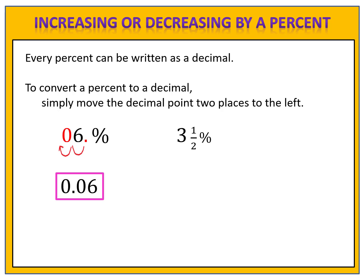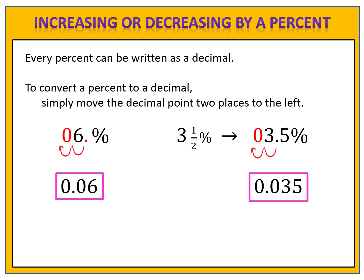How about 3.5%? The decimal point is already written, so we simply need to move it two places to the left. Written as a decimal, we have 0.035. So 0.035 is equivalent to writing 3.5%.